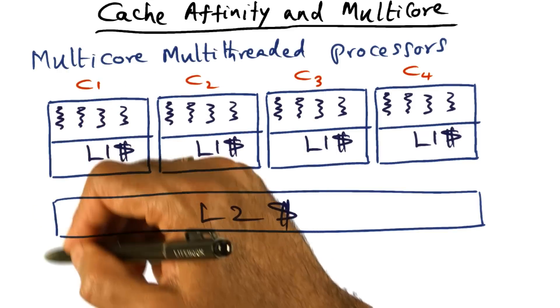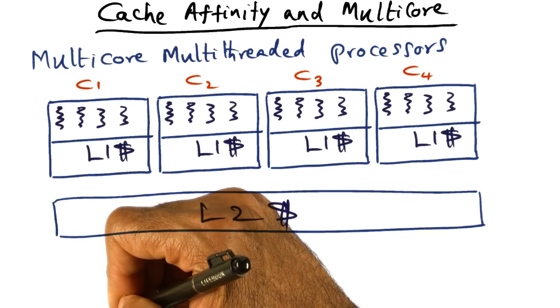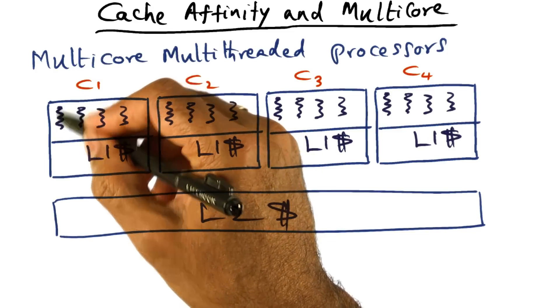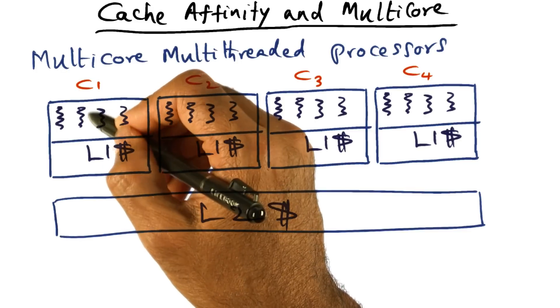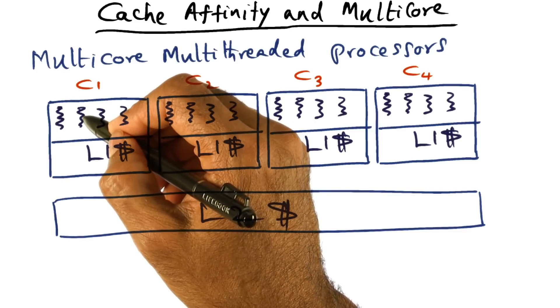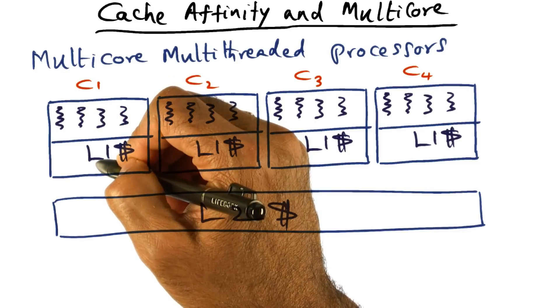If this thread does a memory access which is going outside the processor, then the hardware is going to say, well, this guy is going to be waiting for a while, so let me switch to this guy and let him do its work, because it's possible that what he needs is available in the cache.